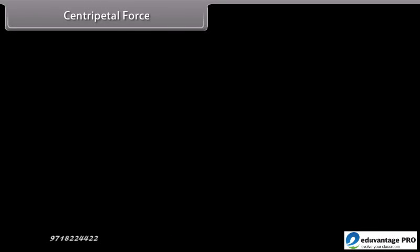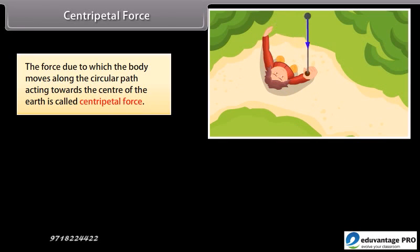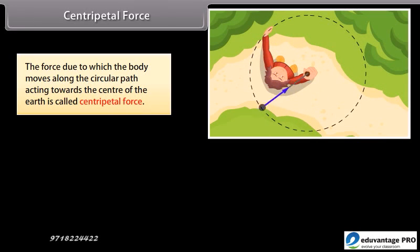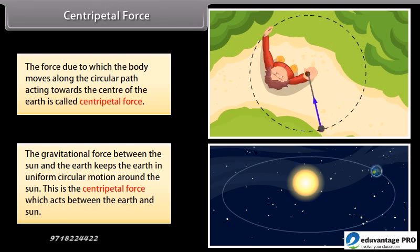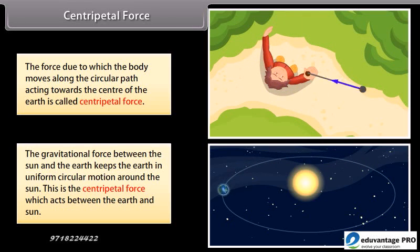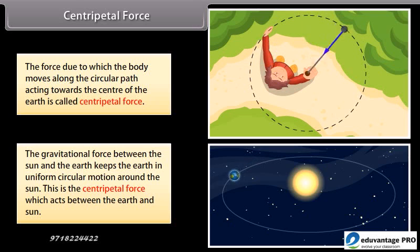Centripetal Force: The force due to which a body moves along a circular path, acting towards the center of the earth, is called centripetal force. The gravitational force between the Sun and the Earth keeps the Earth in uniform circular motion around the Sun — this is the centripetal force which acts between the Earth and the Sun.